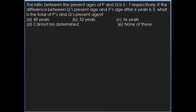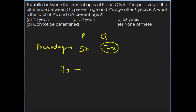The next question: the ratio between the present ages of P and Q is 5 is to 7. If the difference between Q's present age and P's age after 6 years is 2, what is the total of P's and Q's present ages? Let P's age be 5x and Q's age be 7x. P's age after 6 years will be 5x plus 6.